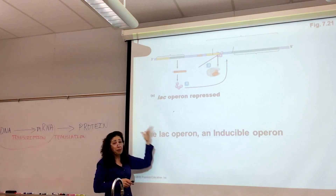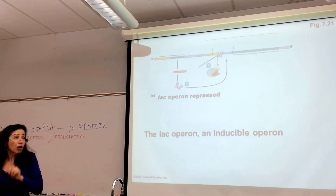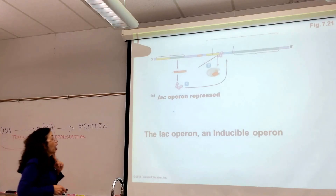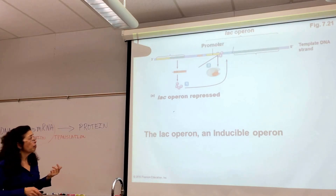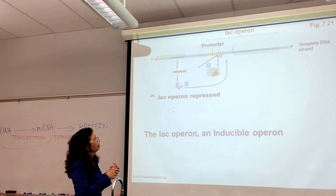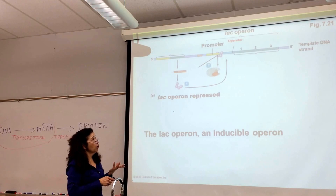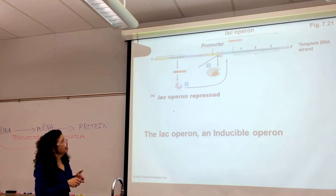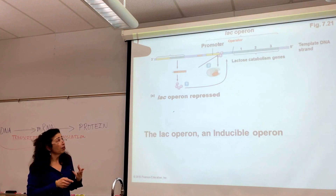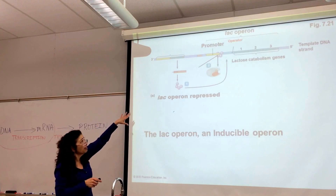Here's the lactose operon when it's being repressed — when glucose is present. Here is the DNA strand with the lactose operon: your promoter, the operator, and the genes that make up this lactose operon. There are three genes specifically: permease, beta-galactosidase, and transacetylase. All three of those enzymes usually break down lactose, but there's no lactose here — there's glucose present.